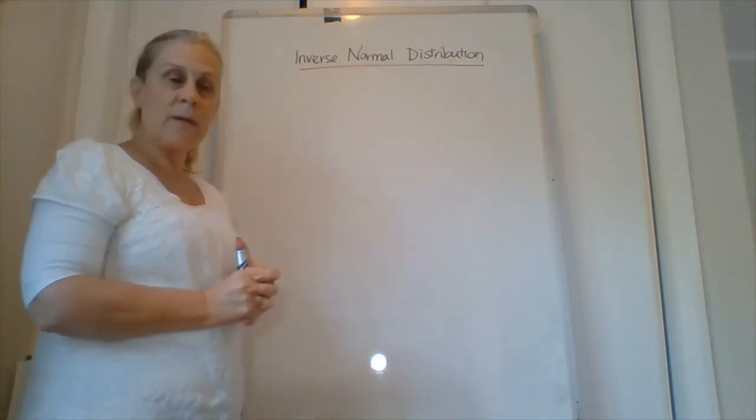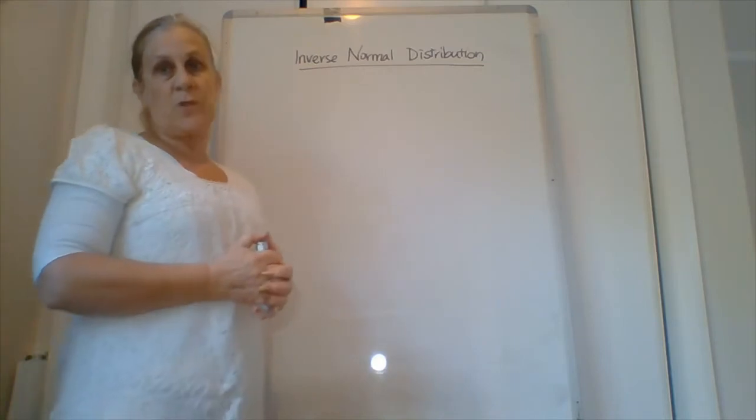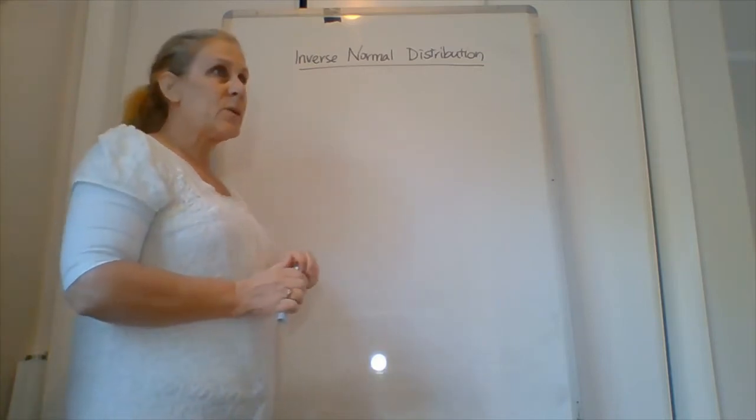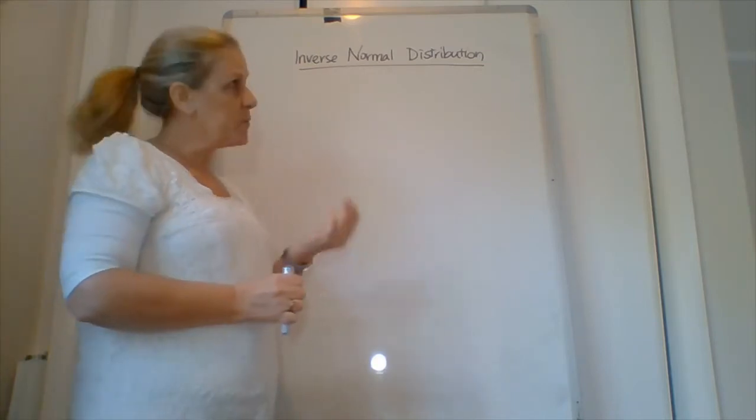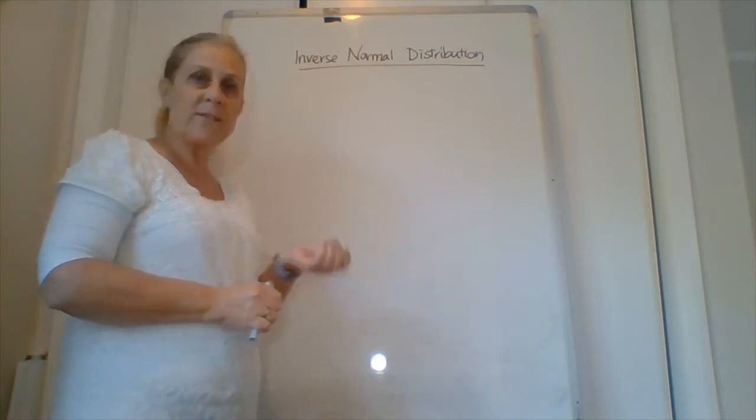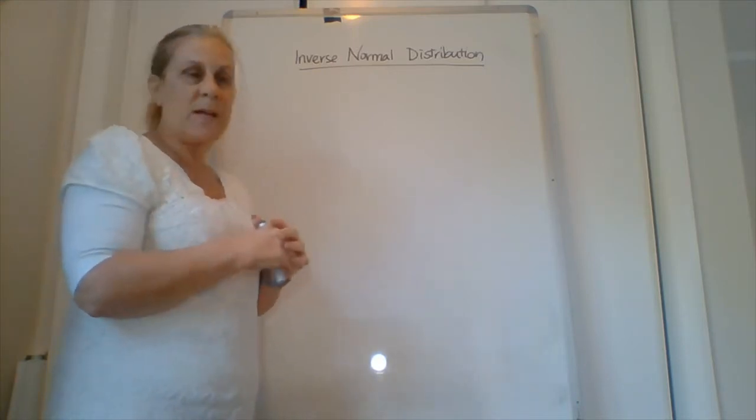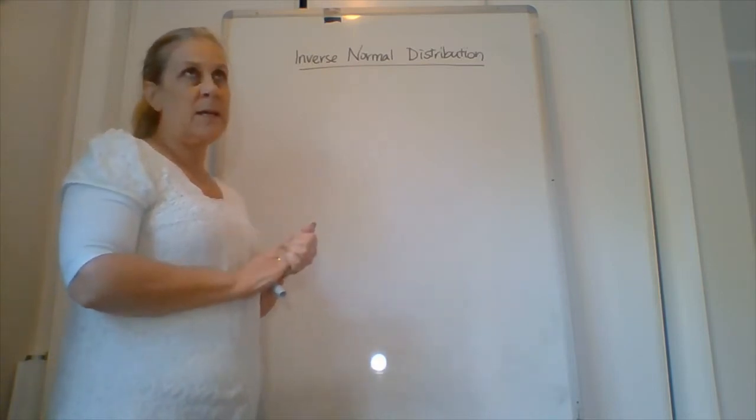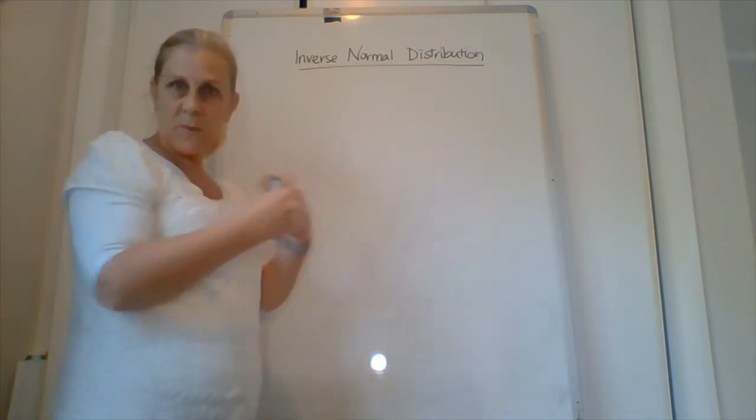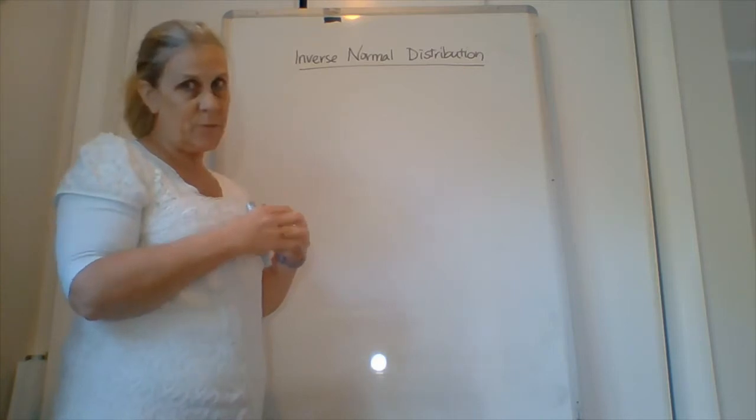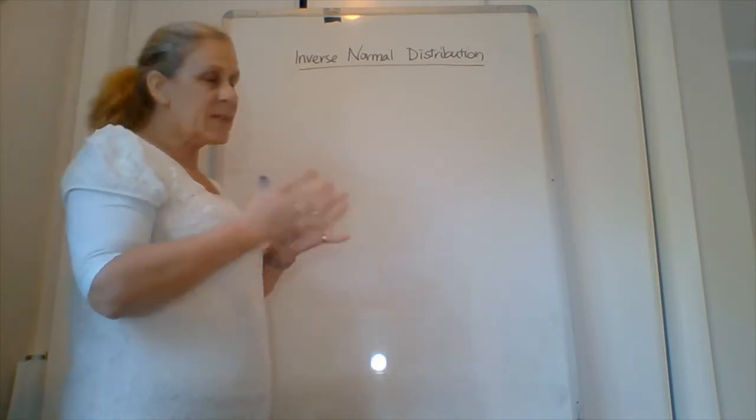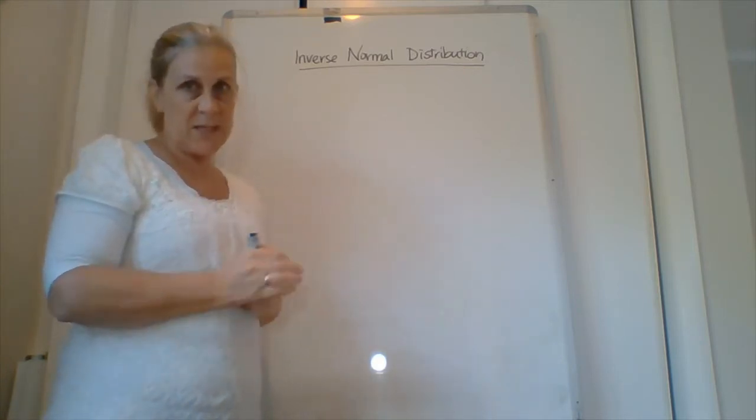Hi guys. So we're up to inverse normal distribution. We've been using the normal distribution to find the probability of something occurring. Now what we have to do is do it in the opposite way. So given the probability, what are the numbers that it falls between?